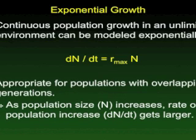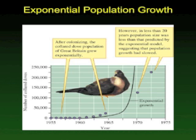The exponential growth rate is described by the formula dn/dt = r_max × N. Here, dn stands for the change in population and dt stands for the change in time. So it's the change in population over the change in time equals r_max, which is the maximum reproductive rate, times N, the population size.